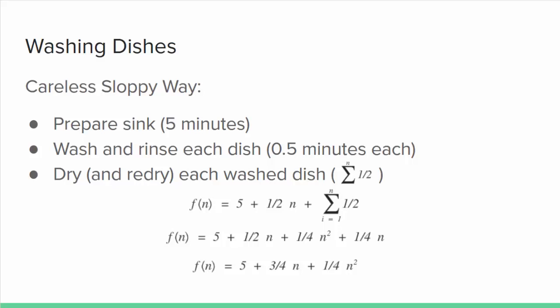But what if we used a different algorithm? In this case, it still takes 5 minutes to fill the sink with hot soapy water, 30 seconds to wash a dish or dry a dish, but we're now extremely sloppy, and every time we wash a dish, we slop water all over the stack of dry dishes. We're also not very smart, so after every dish, we re-dry the stack of wet dishes. It will take the same 5 minutes to prepare the sink and 30 seconds to wash each dish, but drying will now take the sum of 30 seconds for all i from 1 to n, for a total growth function of 1/4 n² + 3/4 n + 5.